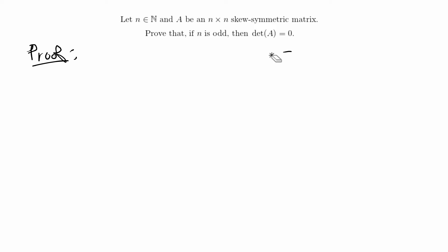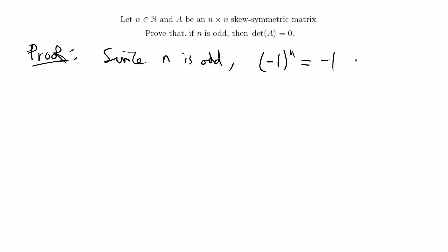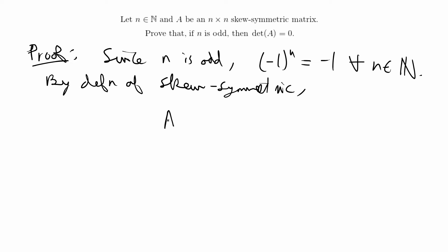So we can go ahead and solve the proof. Since n is odd, we know that negative 1 to the n is going to equal negative 1 for all n. Then we're going to use the definition of what skew symmetric means for a matrix, which is that the transpose of A is always going to be equal to negative A.